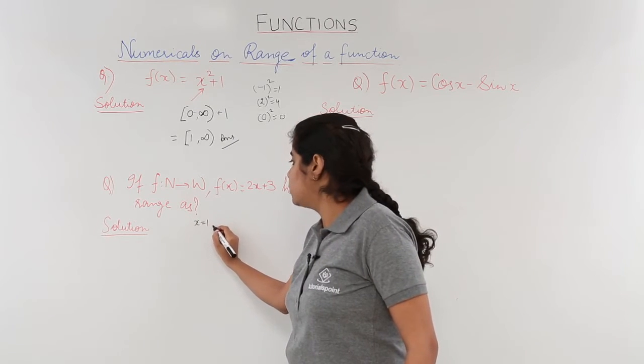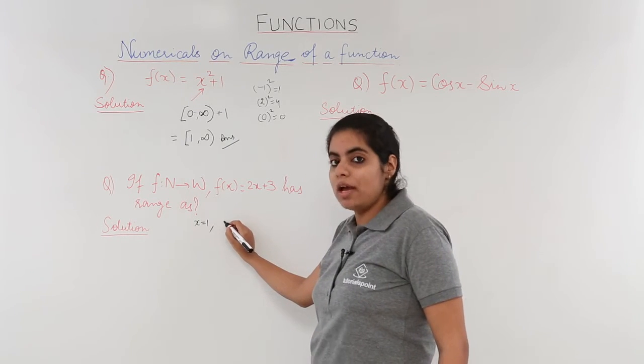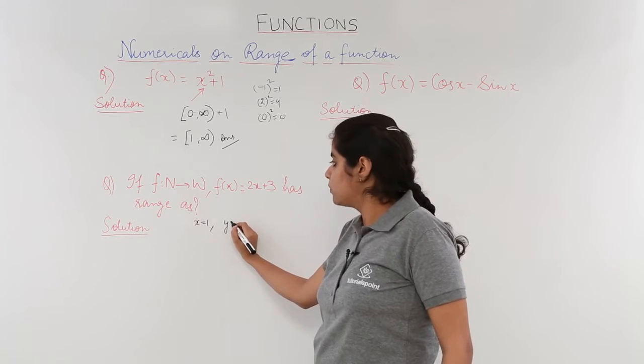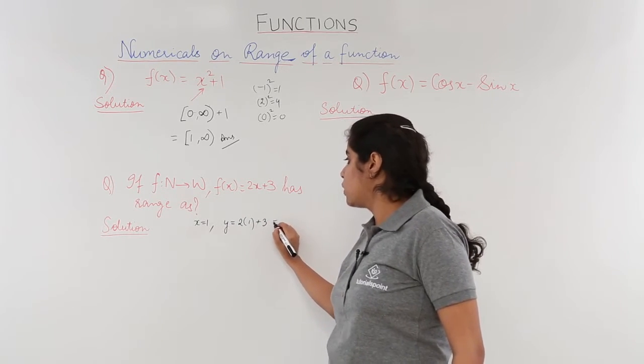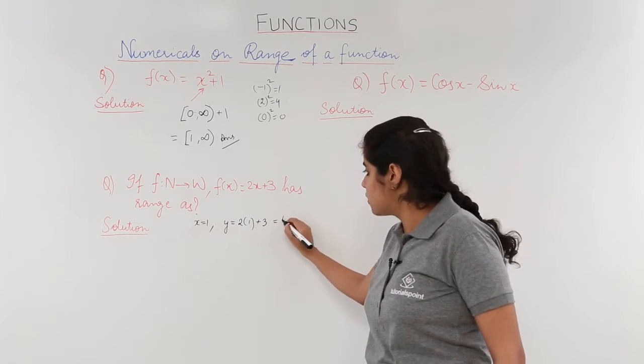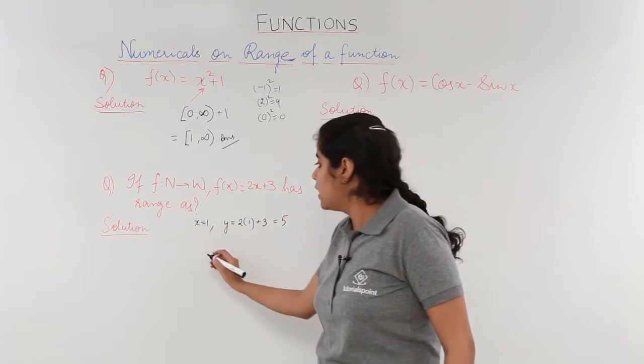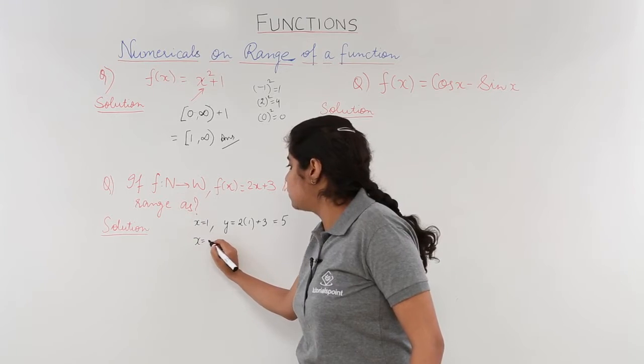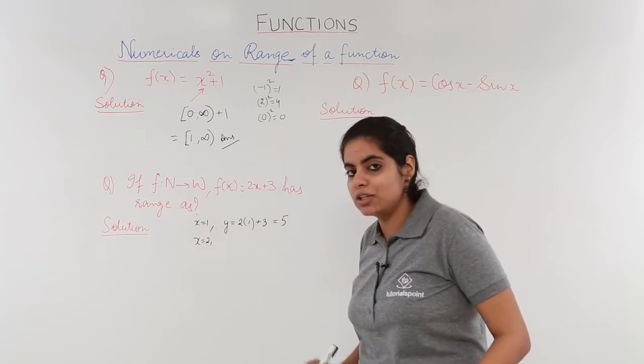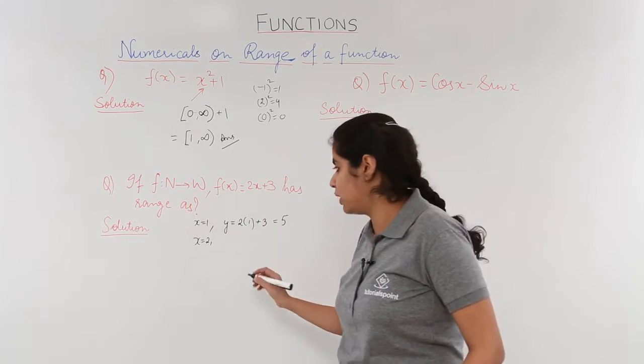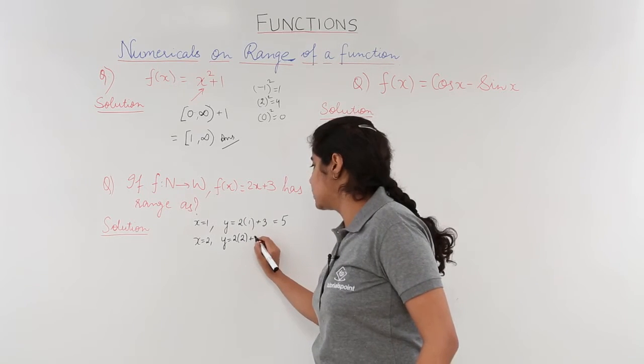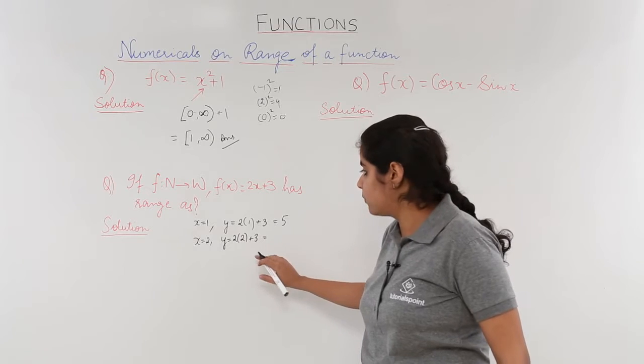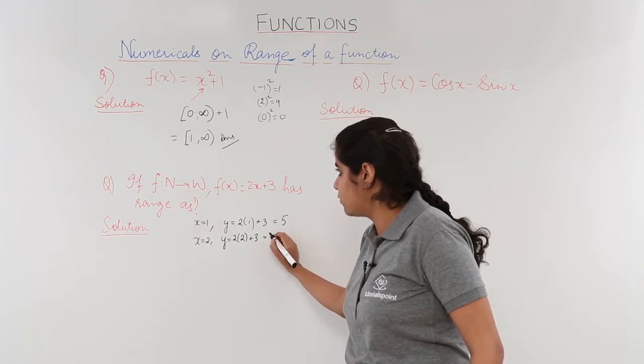When x equals 1, the value of f(x) or y is what? It is 2 into 1 plus 3, which is 2 ones are 2 plus 3, which is 5. When x equals 2, since it is natural numbers we have to start the counting from 1. y equals 2 into 2 plus 3, that is 2 to the 4 plus 3, 4 plus 3 is 7.